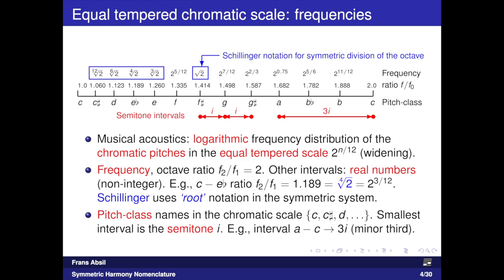For example, the interval from C to F-sharp has a frequency ratio of 1.414, which is the square root of 2. Another example is the interval from C to E — the major third — which has a frequency ratio of 1.260, exactly the cube root of 2. The root number notation is shown for all 12 pitch classes in the chromatic equal-tempered scale, and this root number notation is what Schillinger uses in his symmetric harmony system. My alternative notation, shown in red, is based on the number of semitones in an interval.